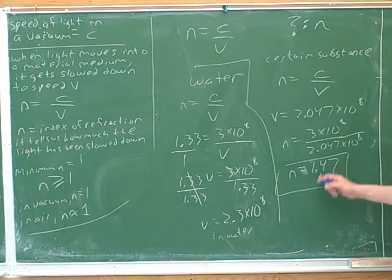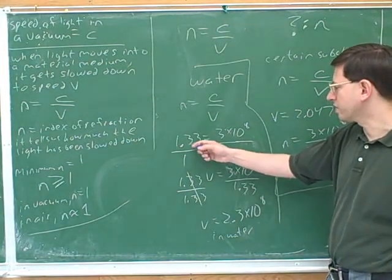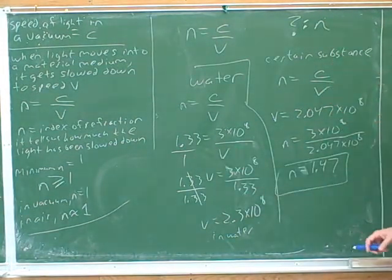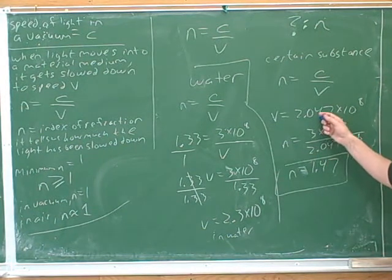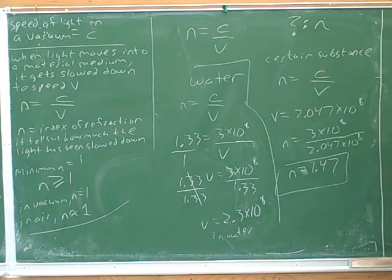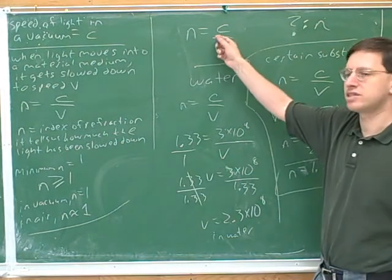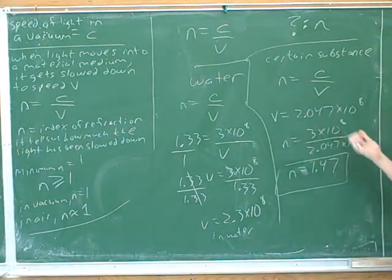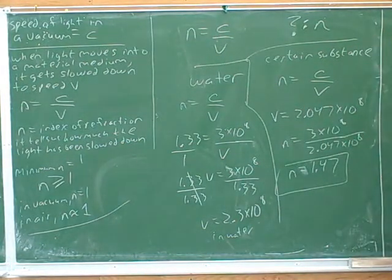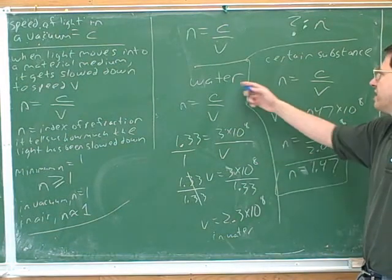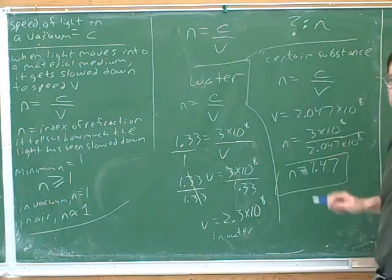This is an even bigger n than the water had. The water had just 1.33, and that's because the speed is even slower here. It's only 89% of what it was doing in the water. n is telling us how much we've been slowed down. All right, this is a little harder than I thought it would be when we started. So you saw correctly at the beginning where we're going to have to use the n equals c over v formula. However, we had to use it twice. And the clue for that is they talked separately about water and this certain substance.